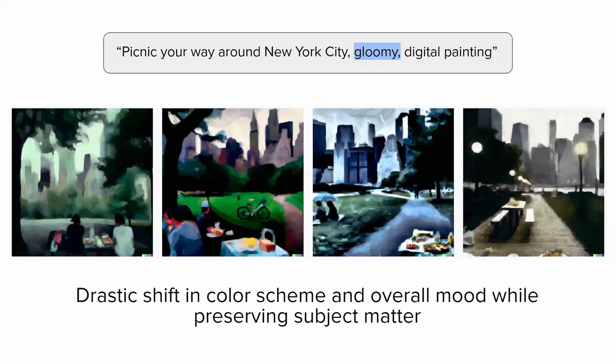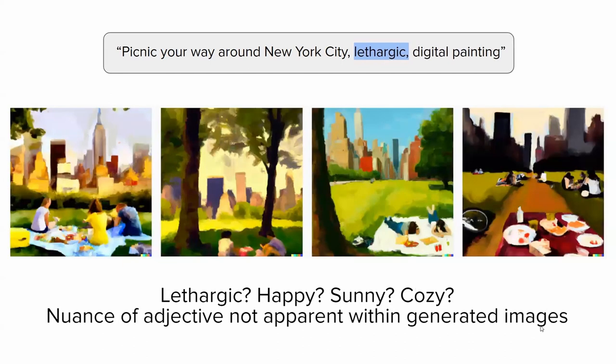The AI model can maintain subject matter while adjusting mood through different artistic techniques. However, these systems struggle with more nuanced or ambiguous adjective keywords. A 'lethargic picnic' doesn't look too different from a 'happy picnic'—it's hard to tell whether images are lethargic, happy, sunny, or cozy. The nuance of ambiguous adjectives isn't apparent in the generated images.